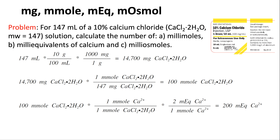For part B, the milliequivalents of calcium: from 100 millimoles of CaCl₂, there is one calcium per molecule, giving 100 millimoles of calcium. Multiply by calcium's valence of 2 — so two milliequivalents per millimole. Millimoles cancel, yielding 200 milliequivalents of calcium. That answers part B.